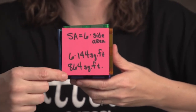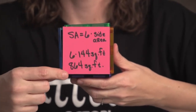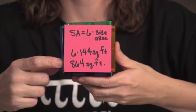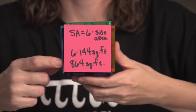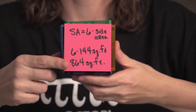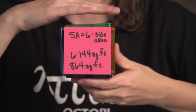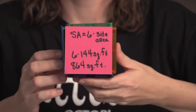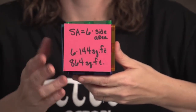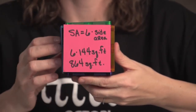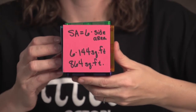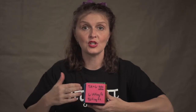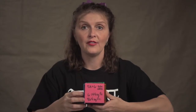So that's six times 144, which is 864 square feet. Notice we multiplied again but we didn't go to cubic — we're still on the surface, so we're still in square feet.